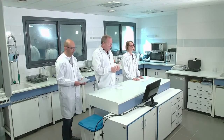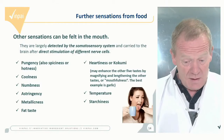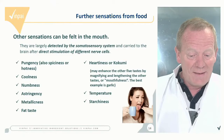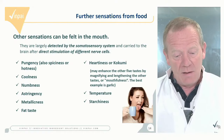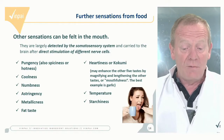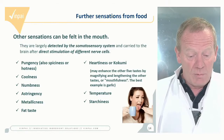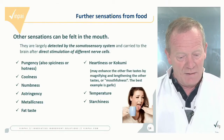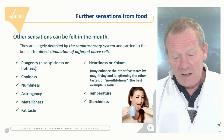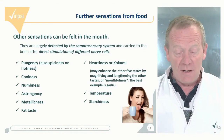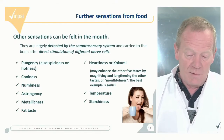Apart from taste and olfaction, further sensations from food are felt in the mouth and are largely detected by what is called the somatosensory system. These sensations are carried to the brain after direct stimulation of nerve cells present in the mouth, and include pungency or hotness or spiciness, coolness, numbness, astringency, metallicness, fat taste, temperature, and starchiness — many different types of sensations that come together to give the global sensation.